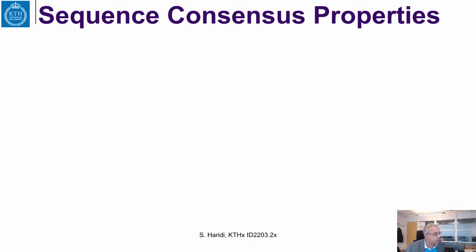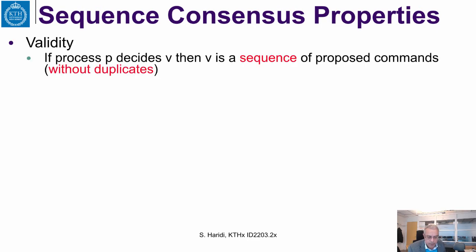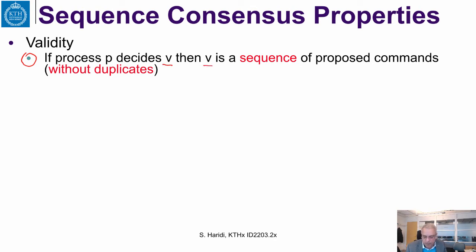Now let us look at the specification of sequence consensus. Values are now sequences. If we say a value is a prefix of another value, it means it is a strict prefix of a longer sequence or it is equal to the other sequence. For validity: only proposed values are values that are decided. In our case, if a process decides on a sequence V, then V is a sequence of proposed commands — it cannot include commands that are not proposed. We can allow a specification that accepts duplicates of proposed commands, or one that requires no duplicates.